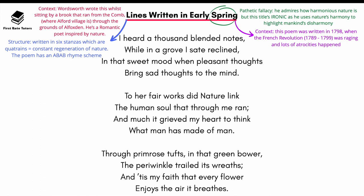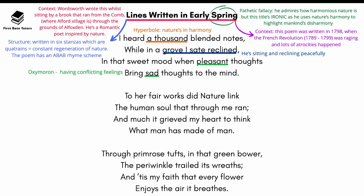In the first stanza, the opening line's reference to 'a thousand blended notes' is hyperbole that illustrates how nature is in perfect harmony. In the second line, 'in a grove I sat reclined' shows he's sitting peacefully as he admires nature. The words 'pleasant' and 'sad' in lines three and four are powerful — this oxymoron shows that even while admiring nature, he's experiencing conflicting feelings.